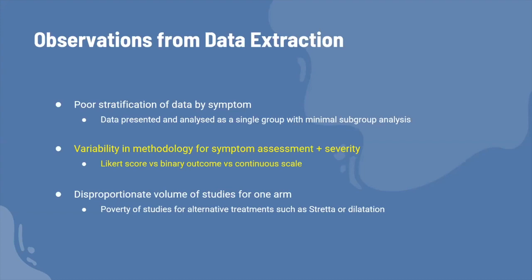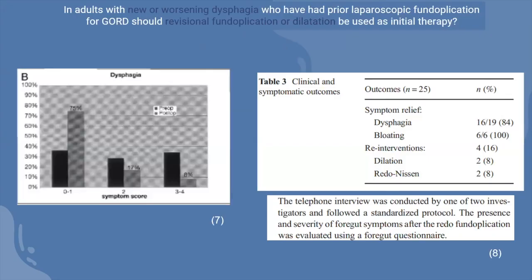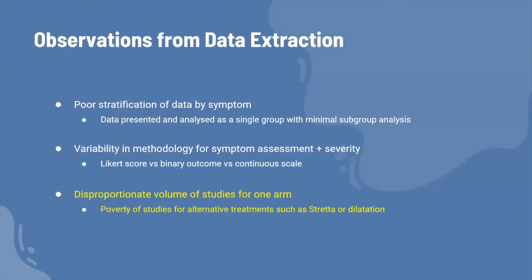There were different ways outcomes were measured: one paper measured dysphagia using a patient-filled Eckardt score where patients circled a number, while another used a telephone interview to simply ask whether they had dysphagia. This makes it hard to compare results across studies because the outcomes were measured so differently. Additionally, there was a disproportionate number of studies for one arm: for KQ1, there were many studies for fundoplication but few for pneumatic dilatation, making comparison difficult.